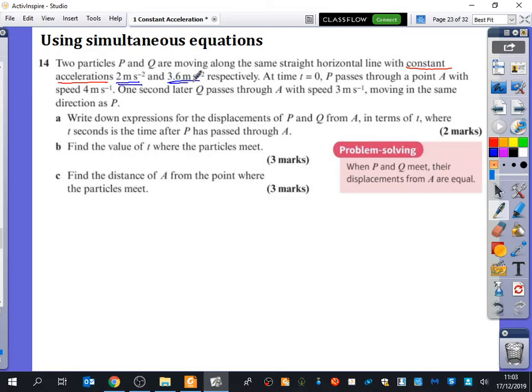So we've got P is going at 2, and Q is going at 3.6. So I think I actually might start writing some of these things down. I've got P and I've got Q. We've been told that the acceleration of P is 2, and the acceleration of Q is 3.6. When time is equal to 0, in other words, at the beginning of this journey, P passes through a point A with speed 4 metres per second. So what is 4 metres per second referring to for P? What letter is it referring to? U. Yeah, it's saying that the initial speed when time is 0, it is 4 metres per second.